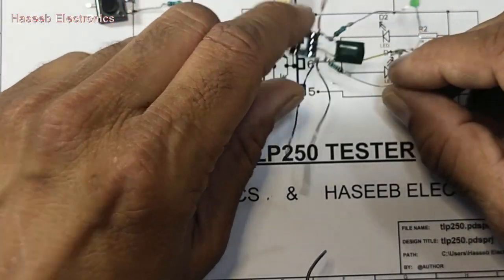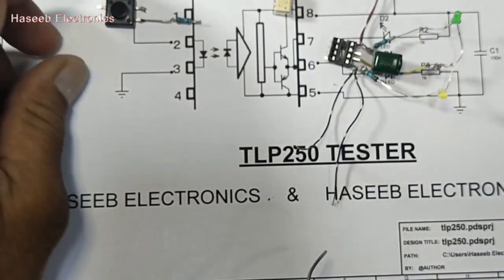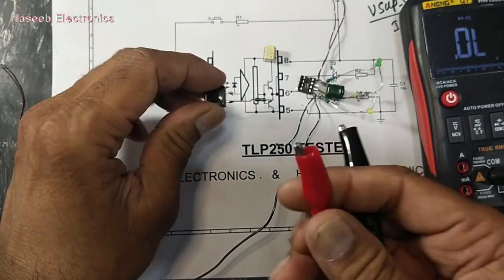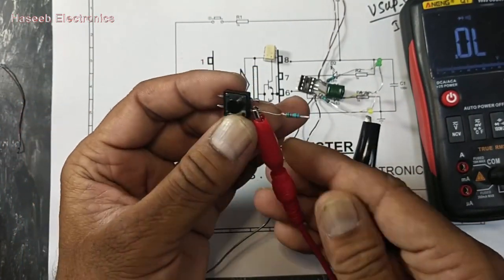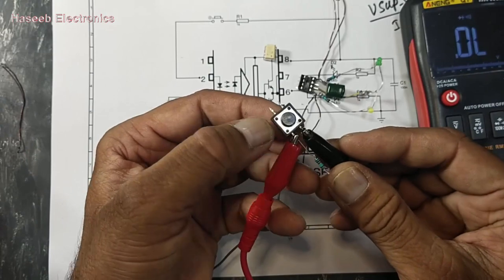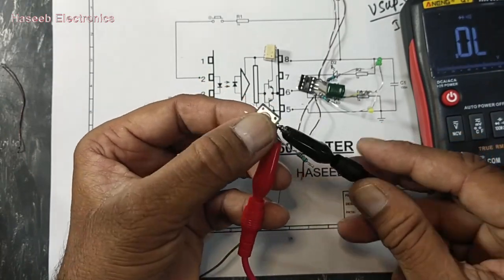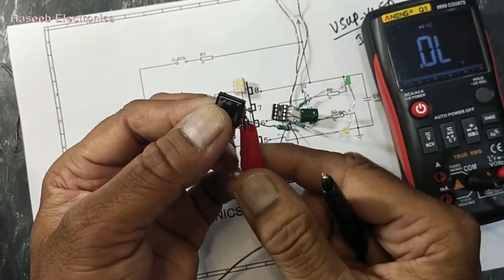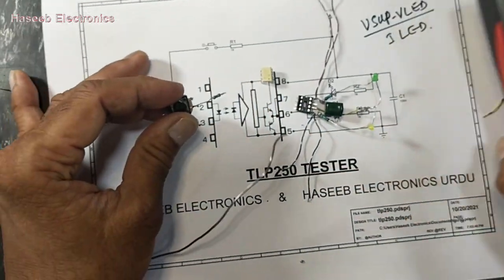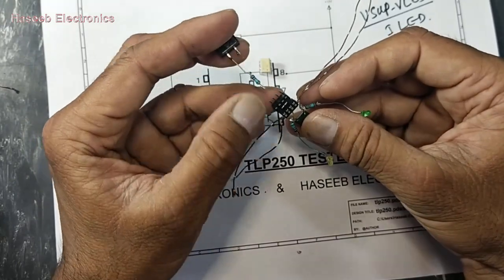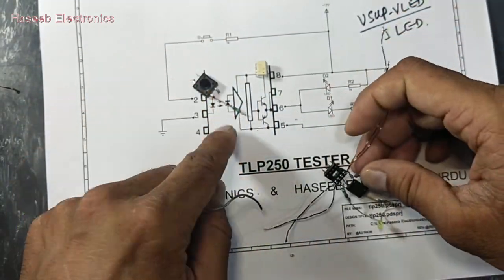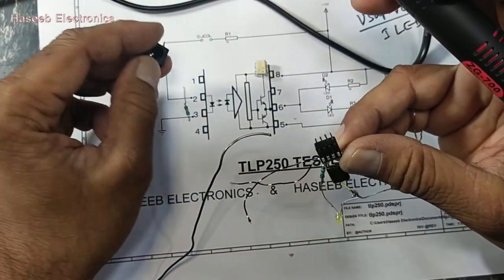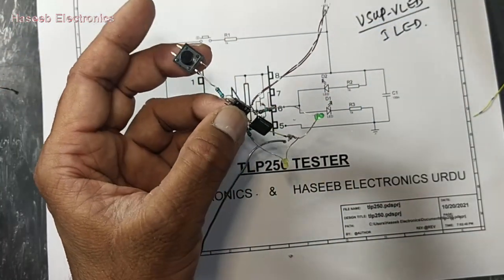Now we need a push button - any push button or switch you can use. In series with this push button we will use 1 kilohm resistor and connect it to pin number 2. You can also use a separate power supply to apply voltage to input side LED.